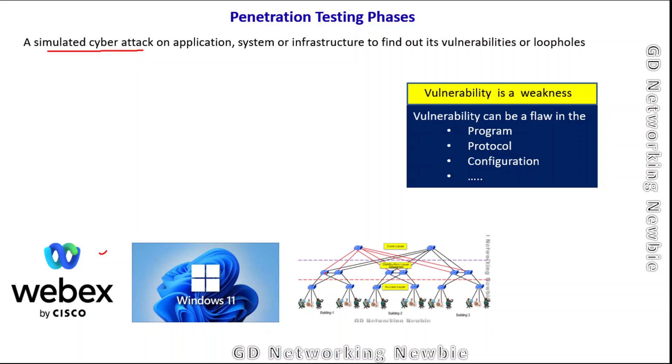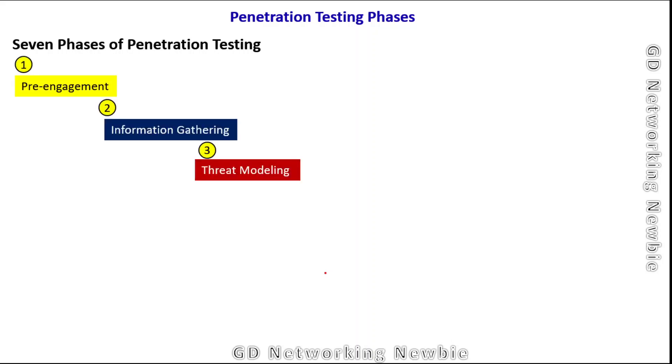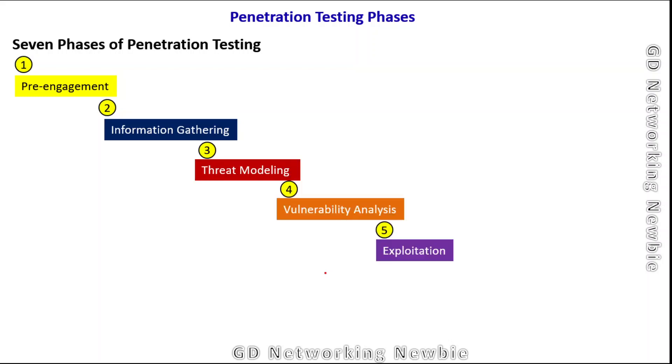For this simulated cyber attack we have different phases. There are seven phases of penetration testing: first is pre-engagement, second is information gathering, third is threat modeling, fourth is vulnerability analysis, fifth is exploitation, sixth is post-exploitation, and the last is reporting.